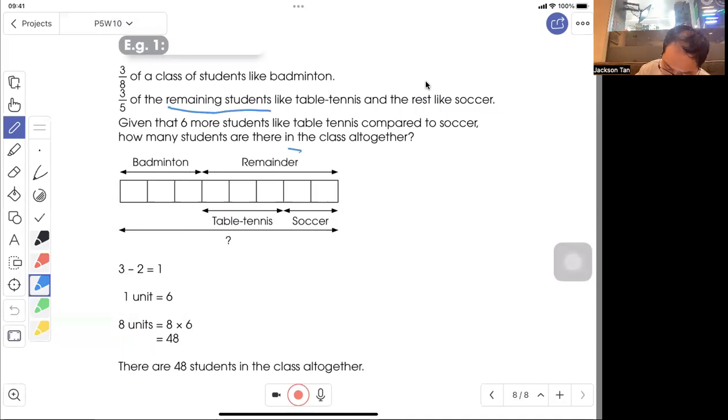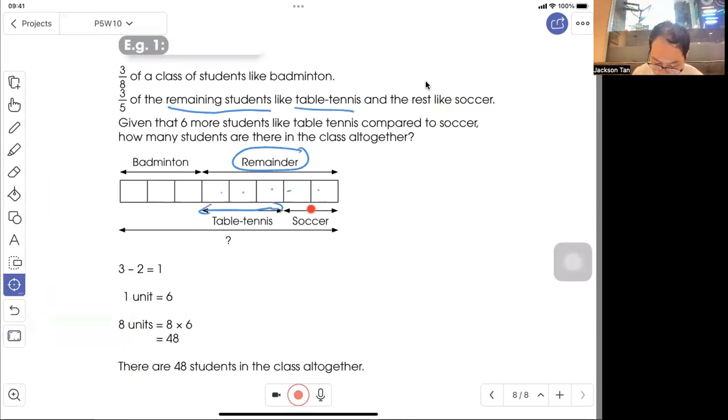3/5 of the remaining students like table tennis, and the rest like soccer. The remaining 5 units are divided: 3 units for table tennis and 2 units for soccer. Given that there are 6 more students who like table tennis compared to soccer, how many students are there in the class altogether?